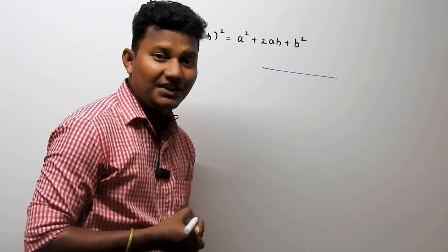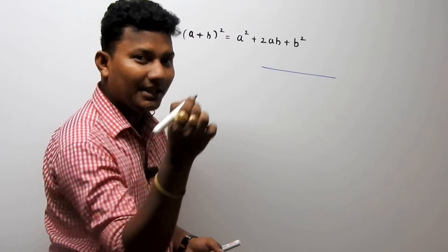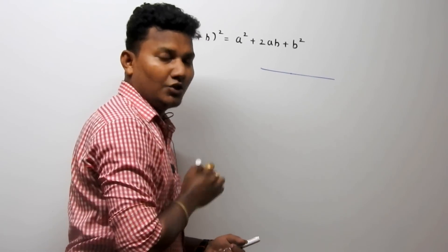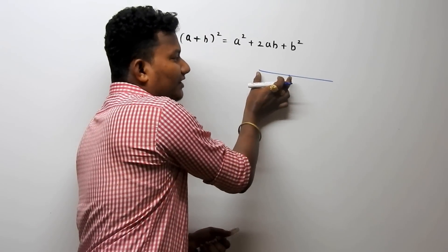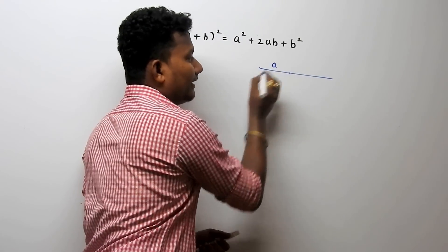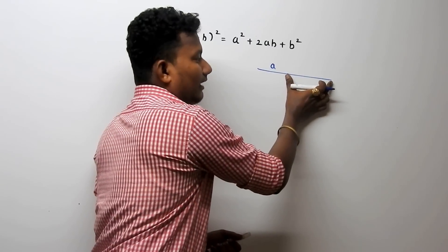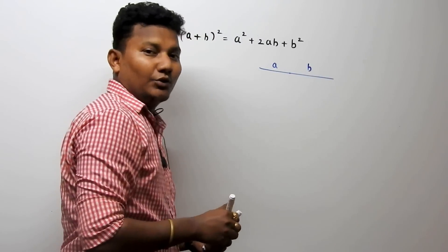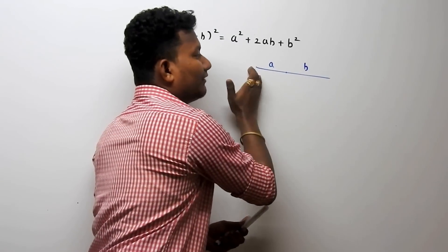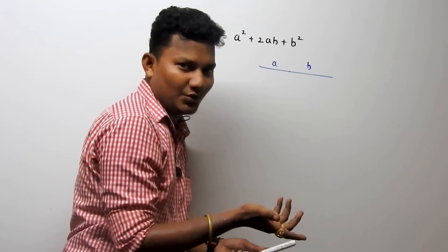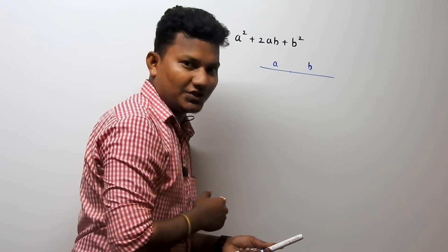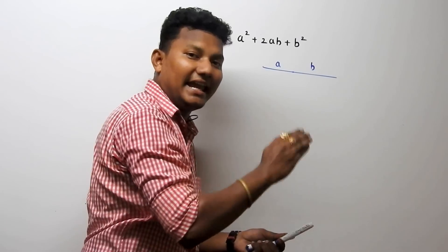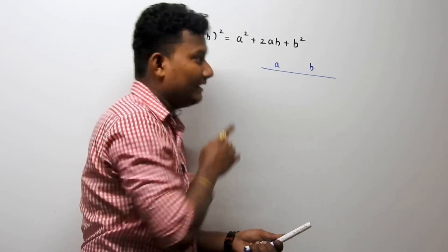Consider a line. I will take a point on this line — anywhere, for example, here. Consider this section from here to here as 'a', and this section from here to here as 'b'. So the total length from end to end will be a plus b, where a and b are constants.